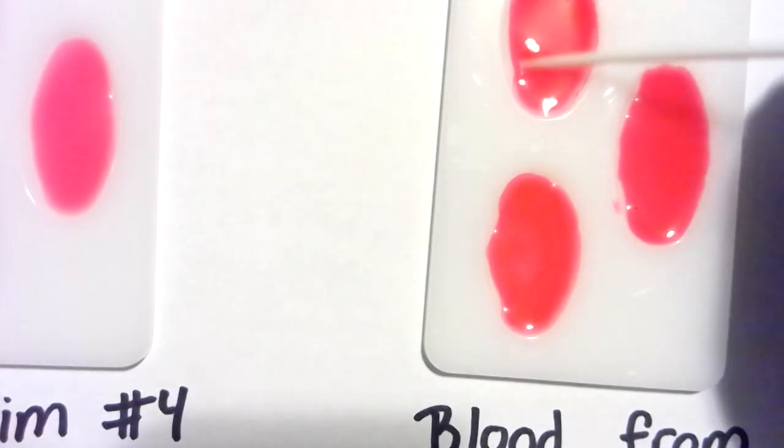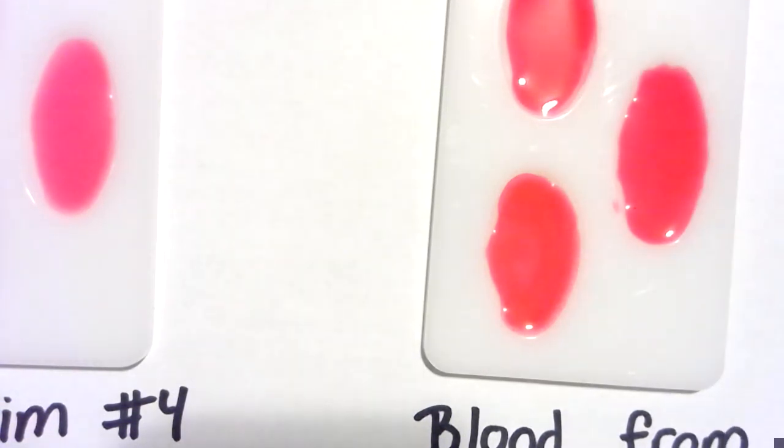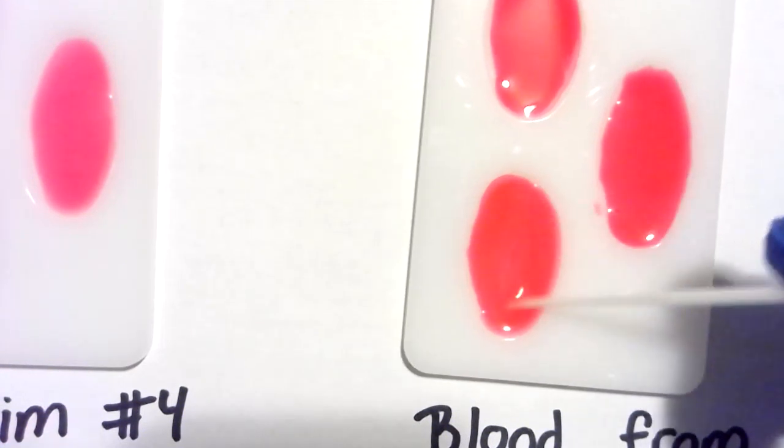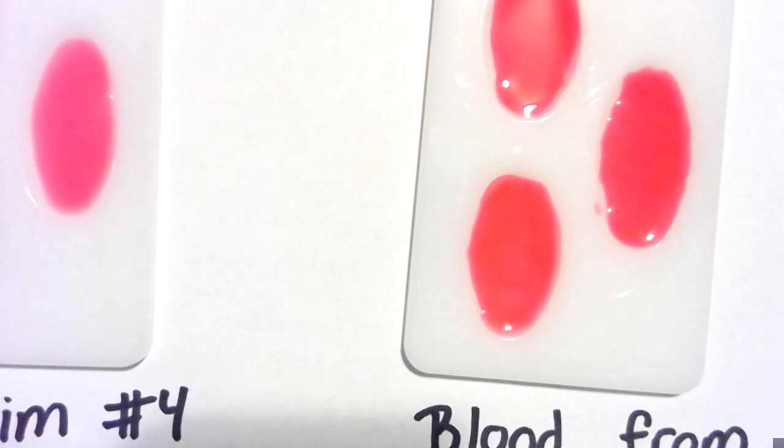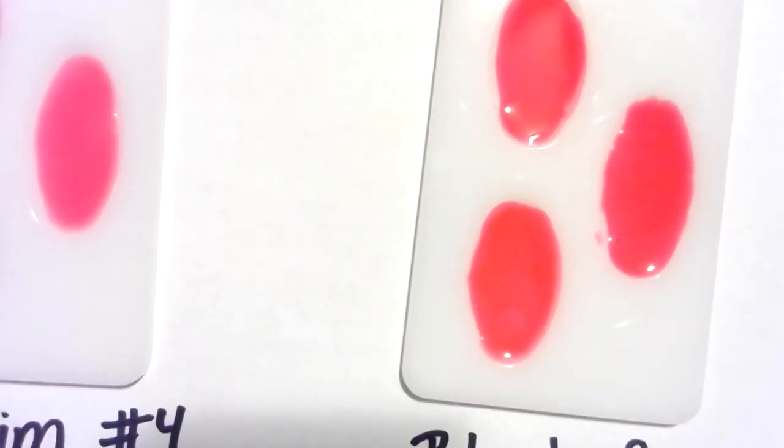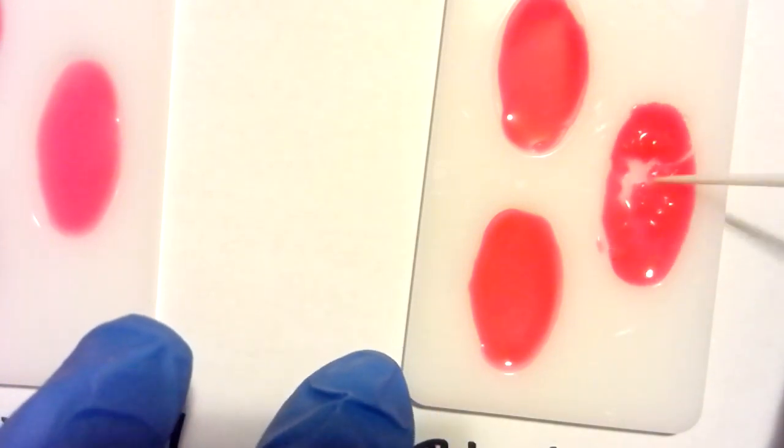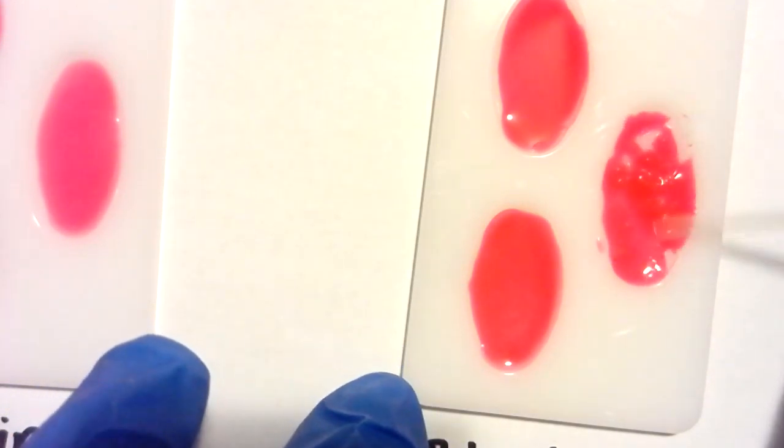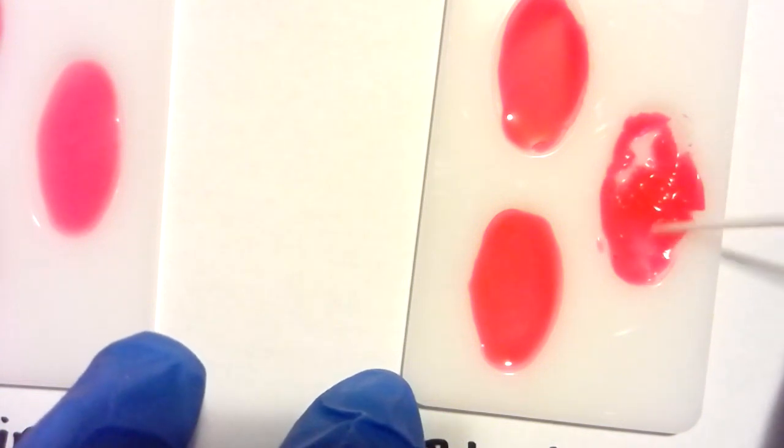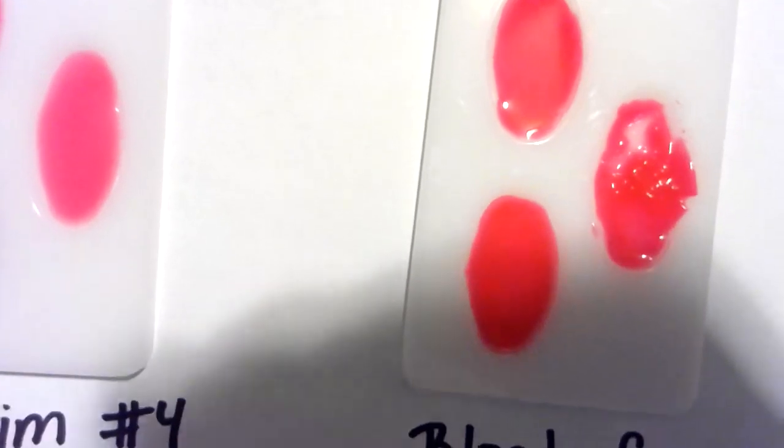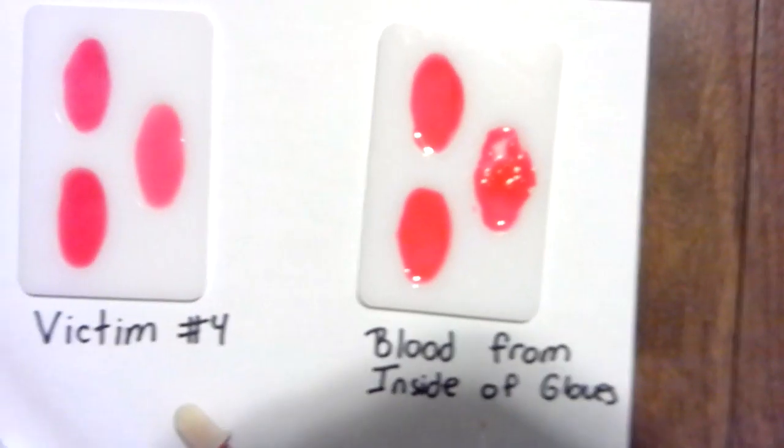From the blood from our gloves, there is no clumping here. No clumping here. And our last... there is definite clumping in that last one. One clumping, and so that last part was the blood from our gloves.